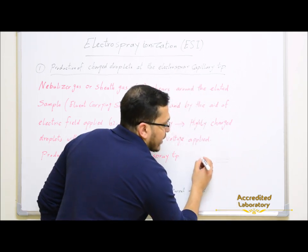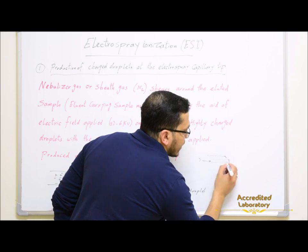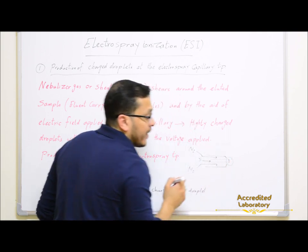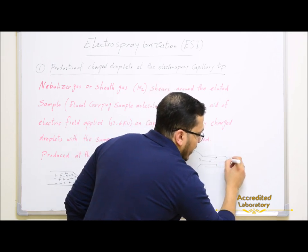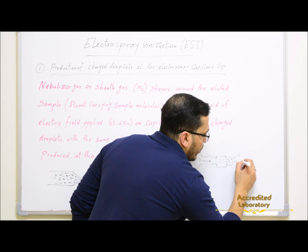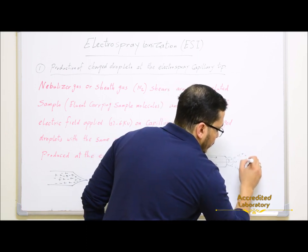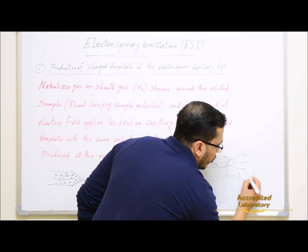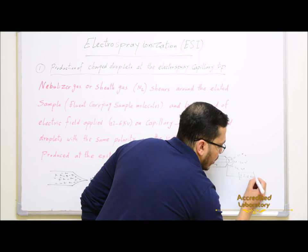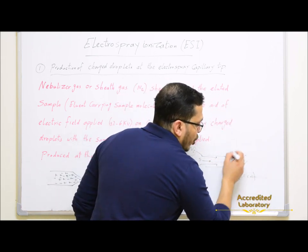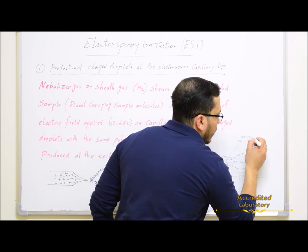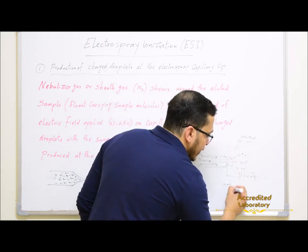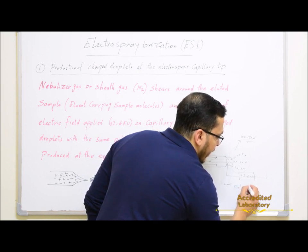The eluent-carrying sample molecules move through the capillary, and nitrogen gas shears around the eluted sample. At the exit of the electrospray capillary, the eluent-carrying sample molecules are sprayed to form spray droplets by the aid of nitrogen gas and high voltage of plus or minus 2 to 6 kV applied on the capillary. These charged droplets are produced with the same polarity as the voltage applied.